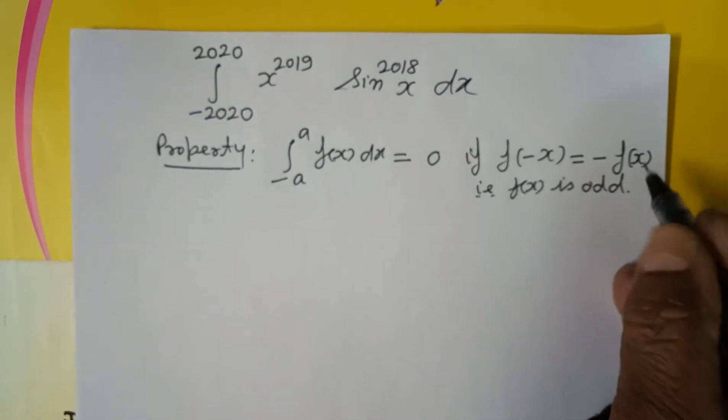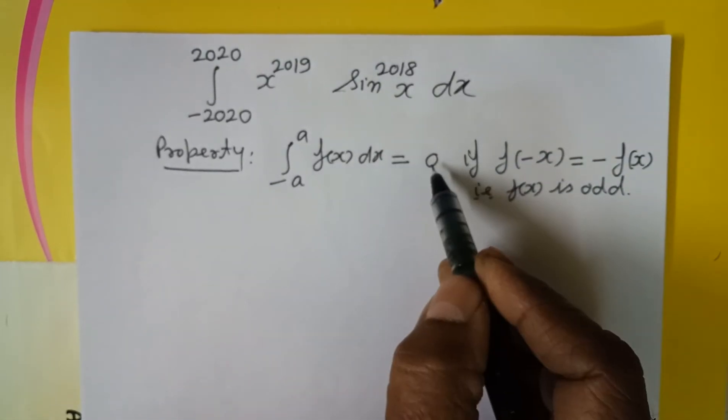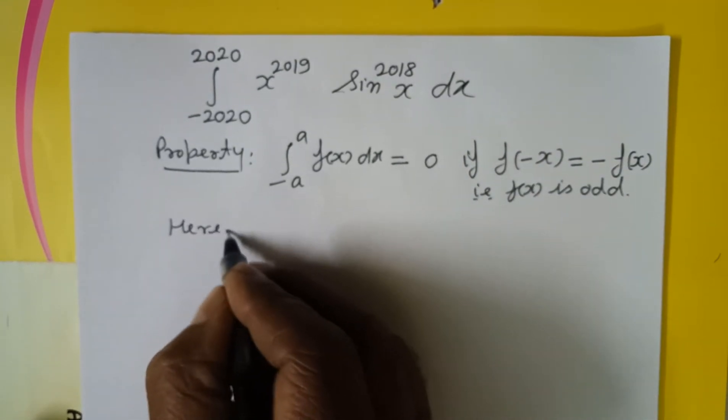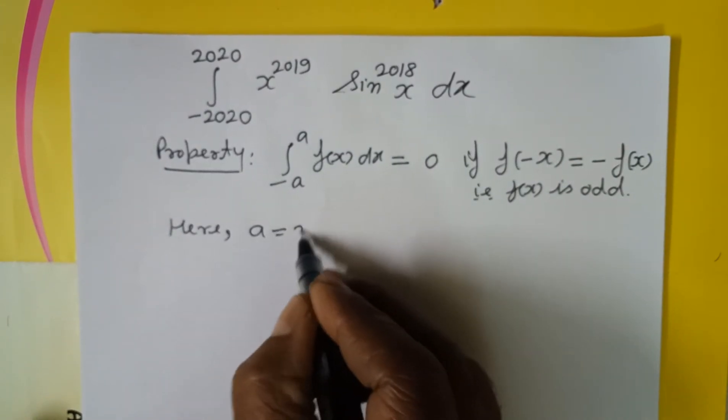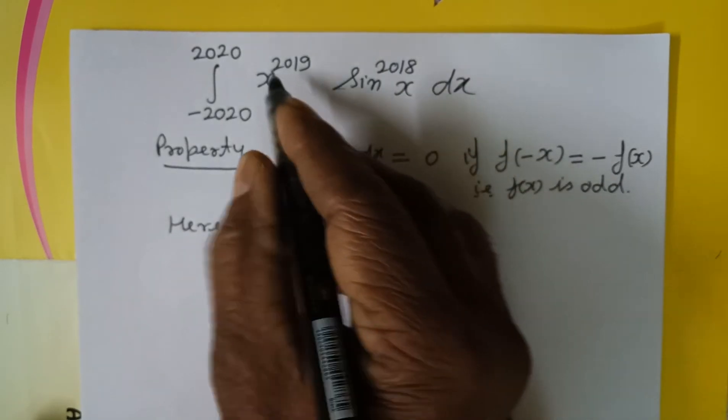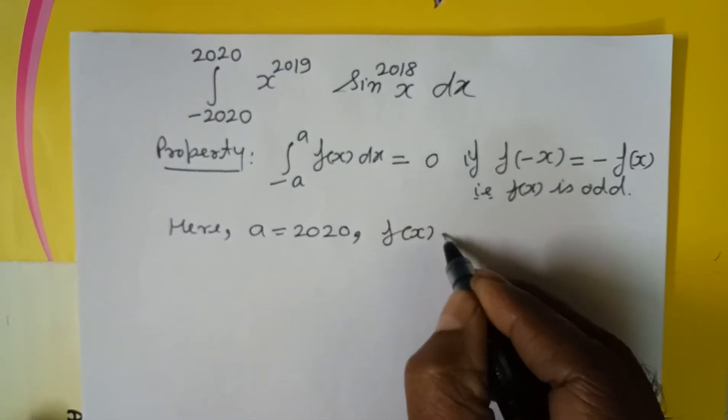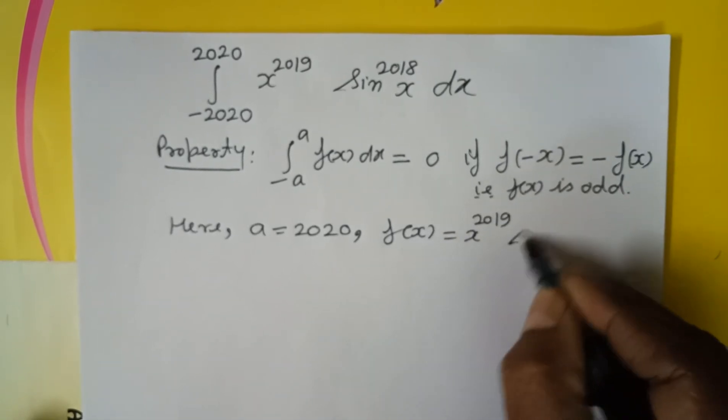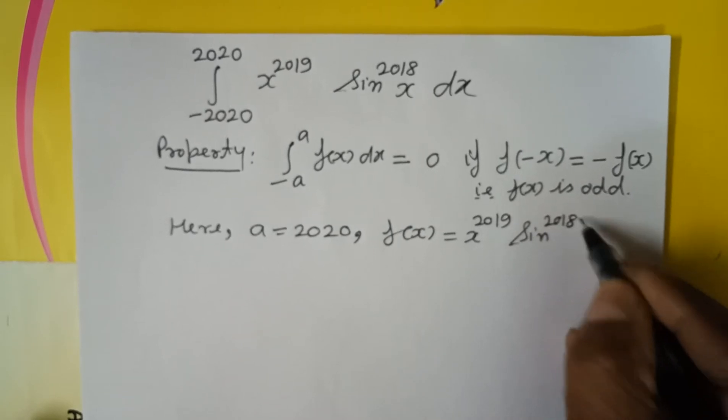And if your function turns out to be odd, then the integral value becomes 0. Here in this question, the value of a is 2020. f(x) is x to the power 2019 and sin to the power 2018 x.